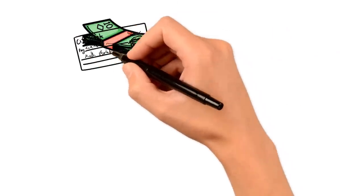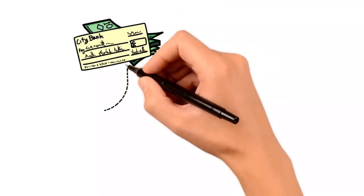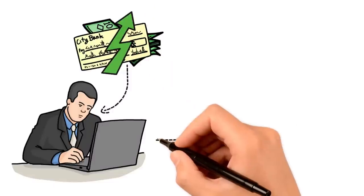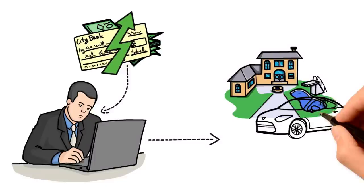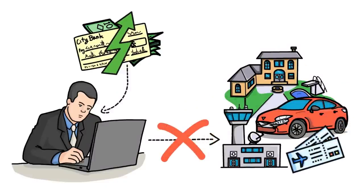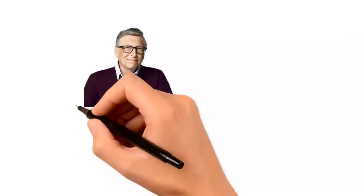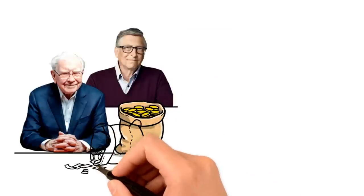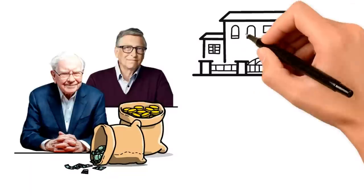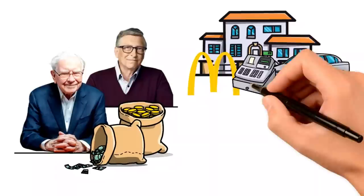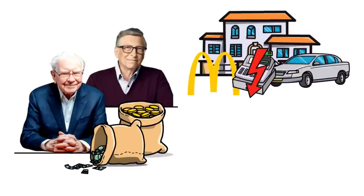We all want to become rich, so we believe the more income we make, the faster we move out of the poor zone. But we often forget that no matter our income, it becomes useless when we begin to spend on frivolous things and don't cut our budget. This is the mistake that people make that keeps them in the poor zone.